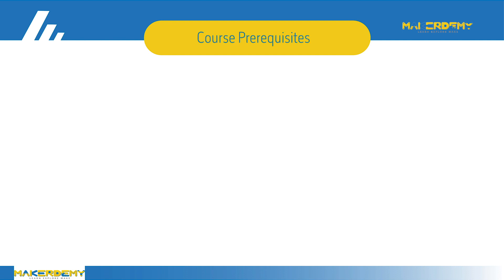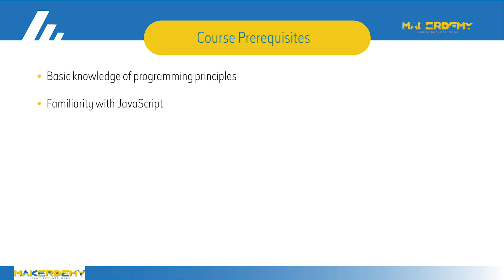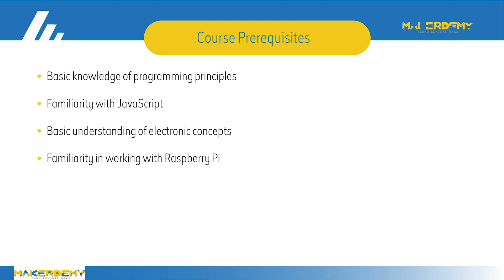Now let's look at the course prerequisites. To get maximum value out of this course, you should have at least a basic knowledge of programming principles. If you're familiar with JavaScript, it will be a lot easier for you to follow the course. You would also need to have a basic understanding of electronic concepts, and you should also have familiarity in working with Raspberry Pi.